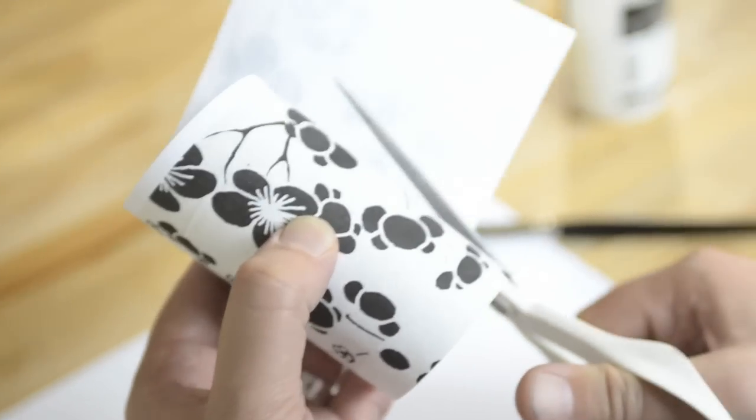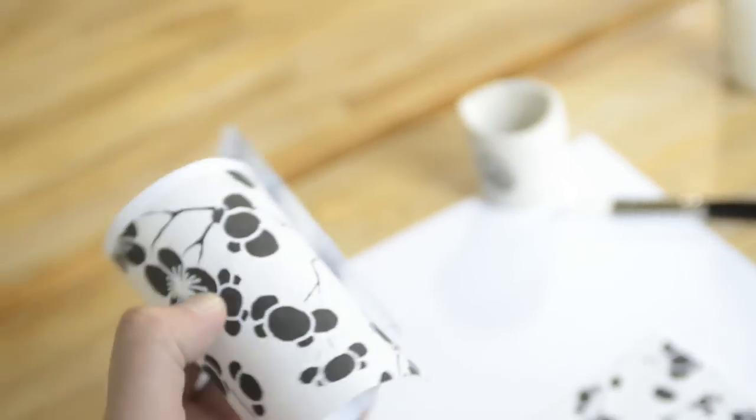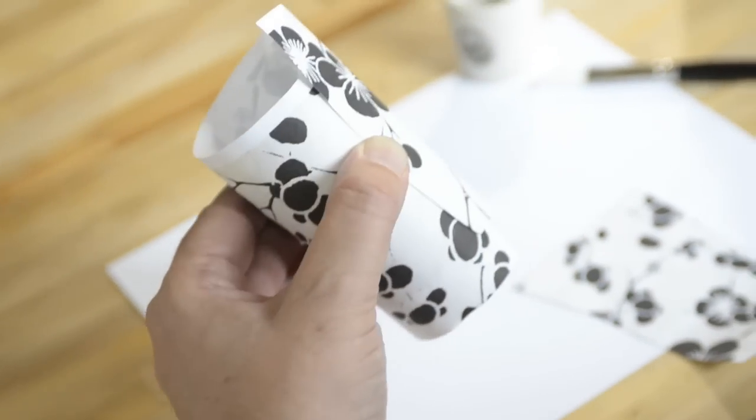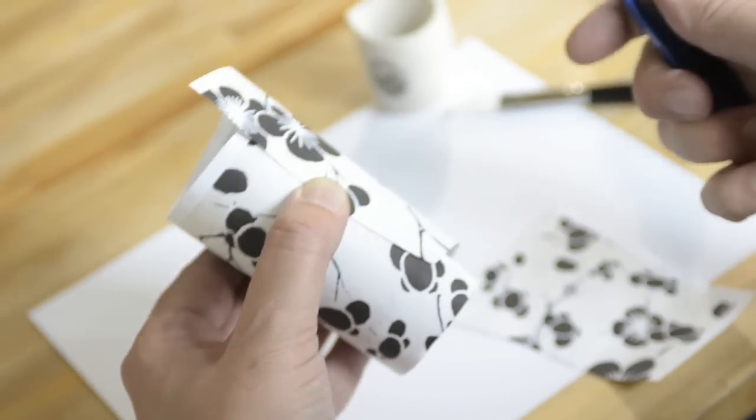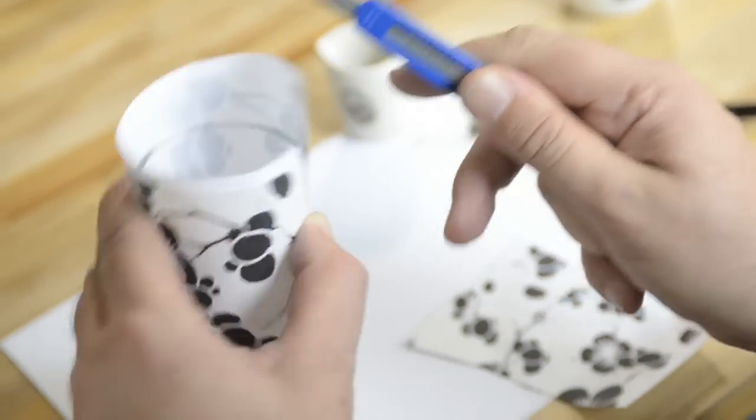Then what I usually do is cut off the excess just to make the trimming easier, and then to make a perfect seam, just take the exacto blade and extend it.